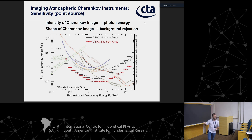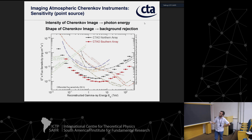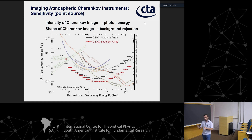You can see two CTA curves: one for the CTA southern array, which is more sensitive than the northern array, especially in the middle to high energy range, because they will have different numbers and types of instruments. Here you can see the curves for Fermi — when we arrive at the range of tens of GeV, which was a window opened by Fermi, the sensitivity degrades monotonically and very rapidly, so CTA already dominates around 100 GeV.